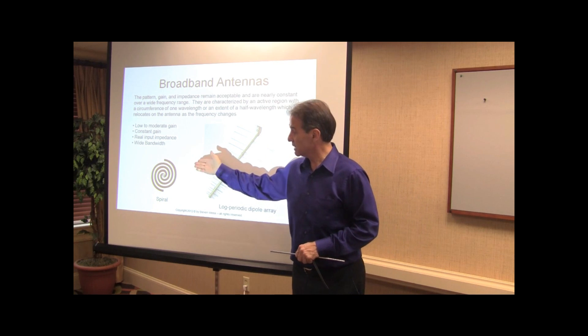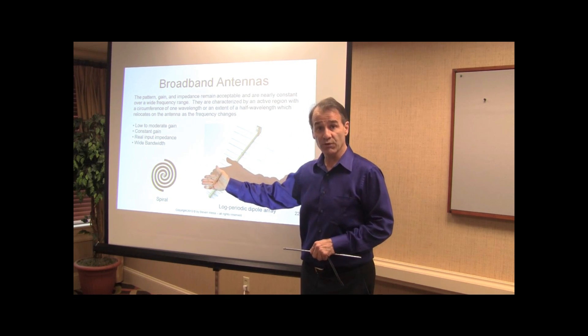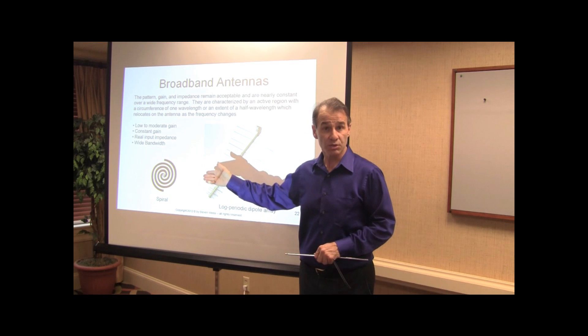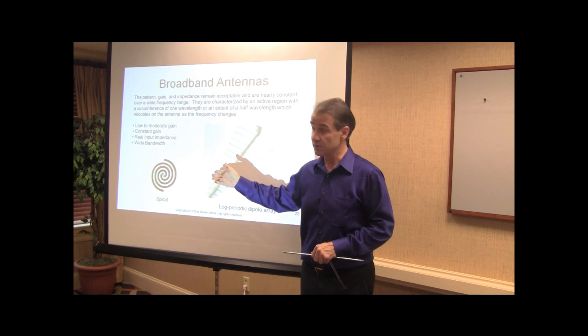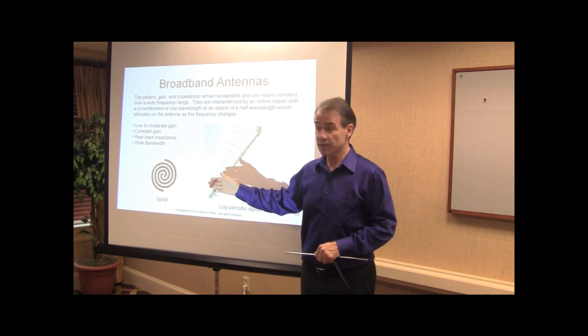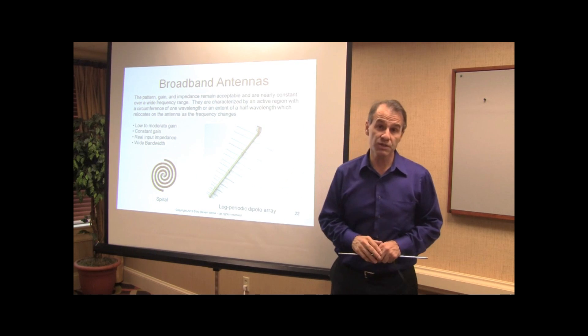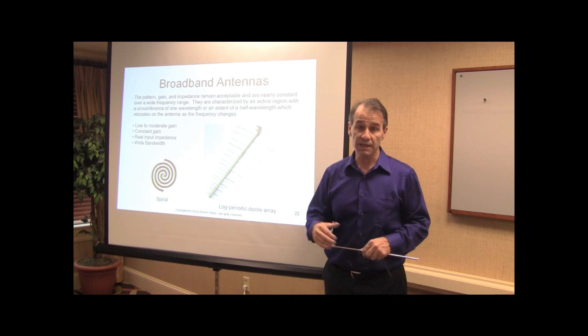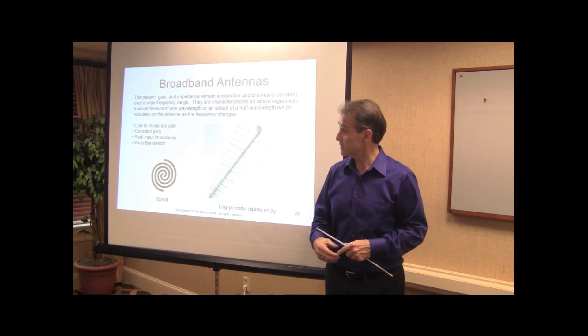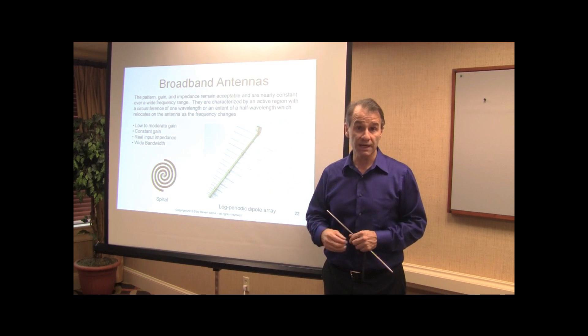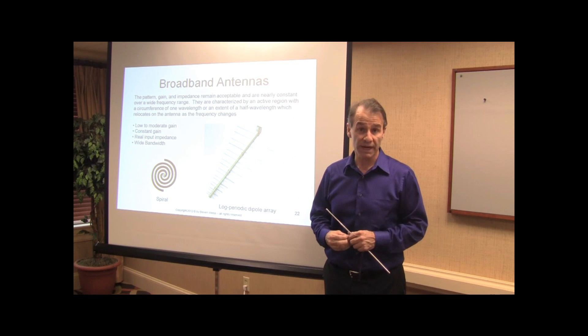And the interesting thing about an antenna such as this is that the lower frequency, they tend to use the entire structure as the radiating mechanism. But as the frequency goes higher and higher, they tend to use less and less of the structure. So the aperture size tends to stay constant as the frequency increases, and that really accounts for the kind of constant gain over the broadband of the antenna.